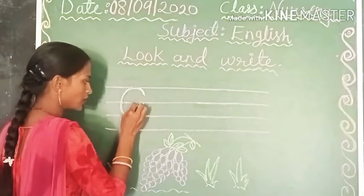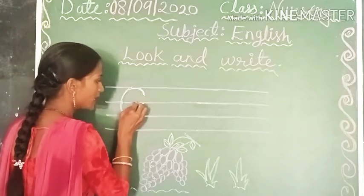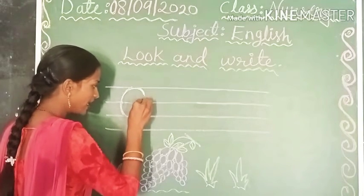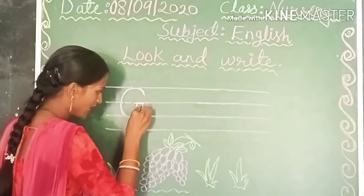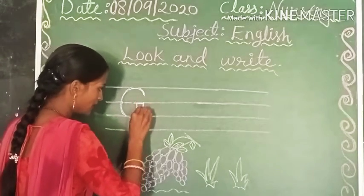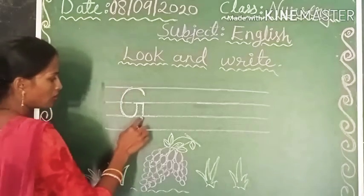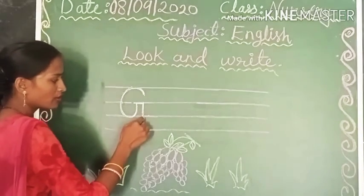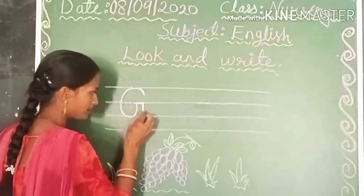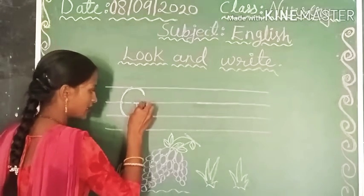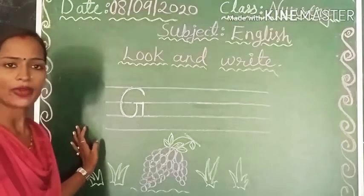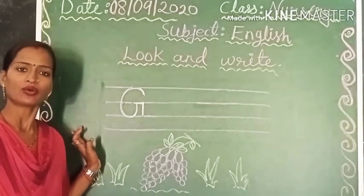यह बन गई आपकी sleeping line, जो आपके circle को touch कर रही है। जहाँ आपका circle end हुआ है, उसके बाद sleeping line के end से हमें straight line, standing line बनाएंगे। यह बन गई आपकी standing line, जो third वाली line को touch करते हुए है। और यह बन गई आपकी standing line, और आपका capital letter G हो गया।